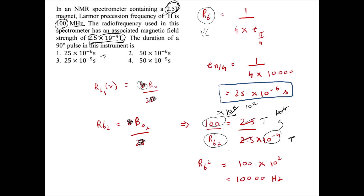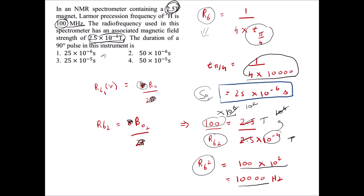RF₂ = 10,000 Hz. Substituting into the pulse formula: t_{π/2} = 1 / (4 × 10,000) = 25 × 10⁻⁶ seconds, or 25 microseconds. I hope you were able to understand some aspects from this video. Thank you for watching, and please share it with your friends.